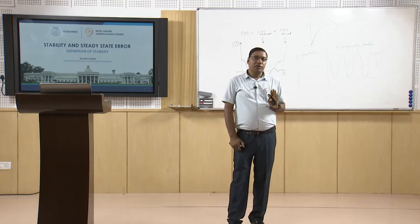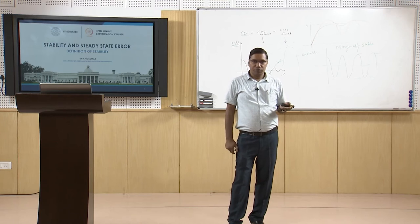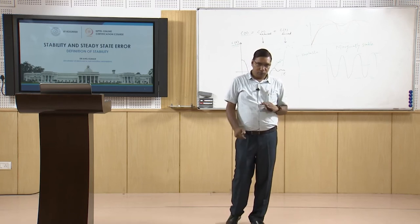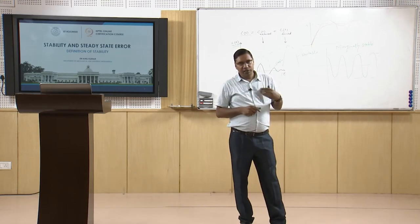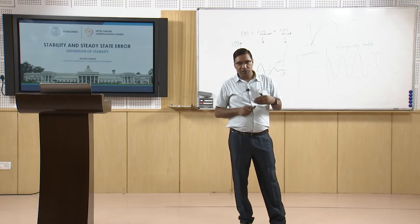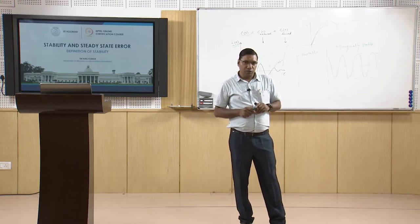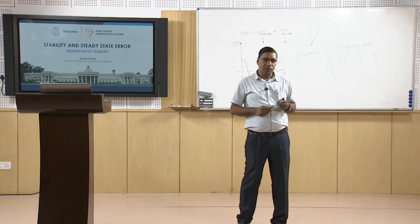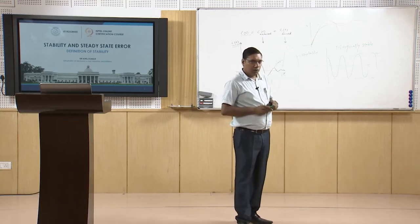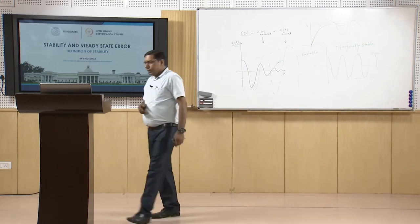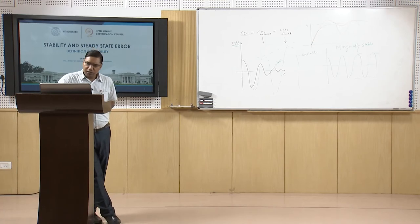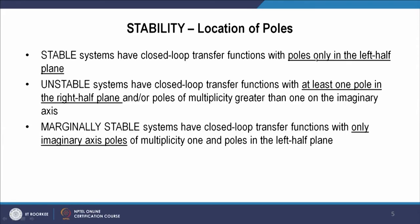We have already linked the response with the poles and zeros of the system. The transient response has been linked to the location of the poles. We can also define stability with the location of the poles: stable systems have closed-loop transfer functions with poles only in the left half plane.